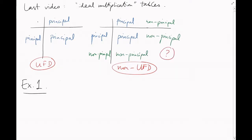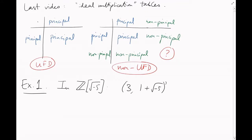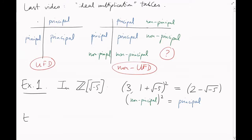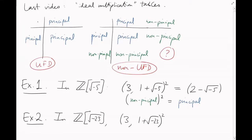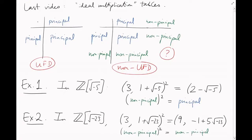Here are two examples. Example 1: in the ring Z adjoined √(−5), the square of the ideal (3, 1 + √(−5)) is the ideal (2 − √(−5)). So this is an example of a non-principal ideal times a non-principal ideal which equals a principal ideal. Example 2: in the ring Z adjoined √(−23), the square of the ideal (3, 1 + √(−23)) is the ideal (9, −1 + 5√(−23)), and there's no way to write this with just a single generator. So this is a non-principal ideal times a non-principal ideal which is still non-principal.